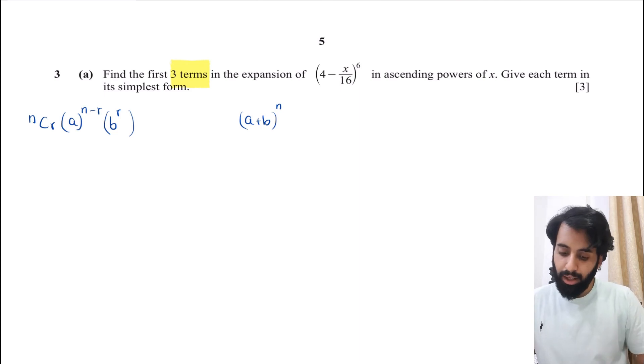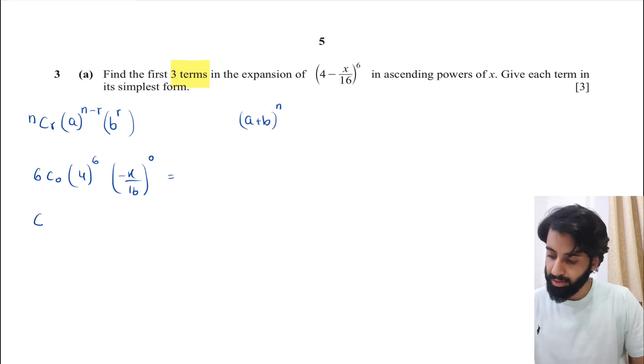Okay, so now here's how we're going to start. n you can see is 6, a is 4, and b is minus x upon 16. So I'm going to start with 6C0 × 4^6 × (-x/16)^0. So this will give me the first term. I'll figure out what this is equal to in the next step, but let's write down the second and the third term.